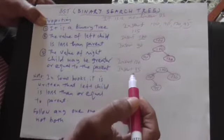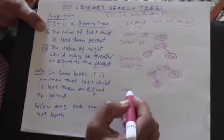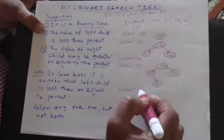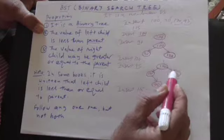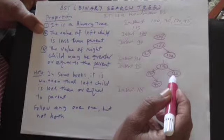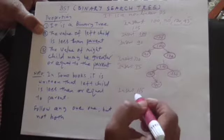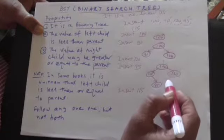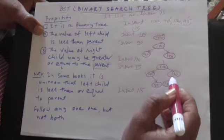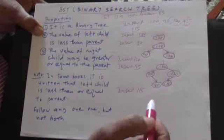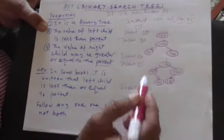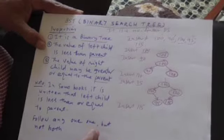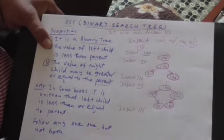Next I insert 115. Again I start at the root. 115 is greater than 100, therefore I move to the right. The right child is 120. Now 115 should be on the left side of 120, but there are no more values to the left side, so I create a node and attach it to the left side. This is how we can insert values into a binary search tree. In my next lecture, I will discuss about the deletion operation. Thank you.